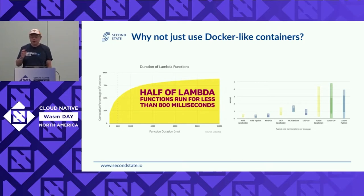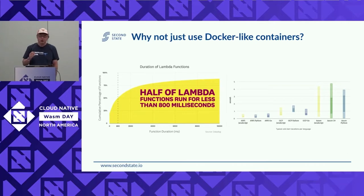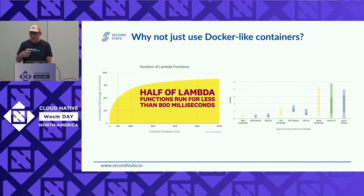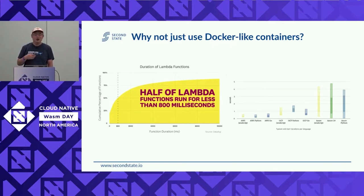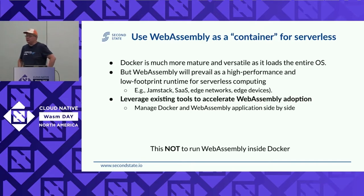Even with mega cloud and supersized data centers, we are still facing the problem of cold start and things like that. That spells problems for having the serverless paradigm available everywhere — on the network edge and on edge devices. So what we want is a lighter application container, something significantly smaller and faster than Docker-like containers to run those lightweight functions, without going through the whole process of starting Docker, an operating system, Node.js, and running everything.